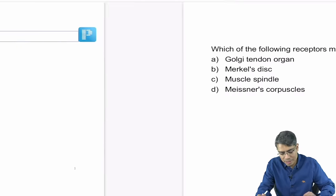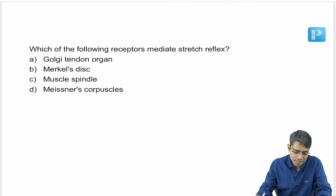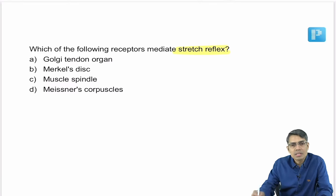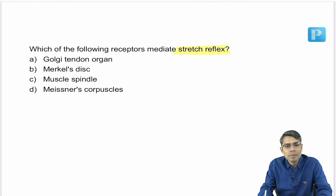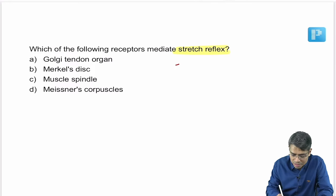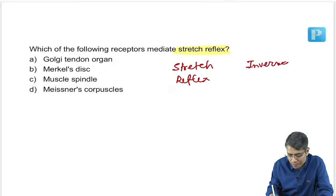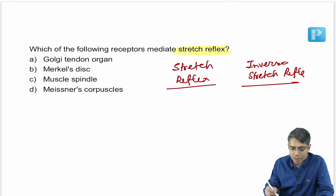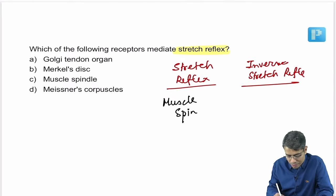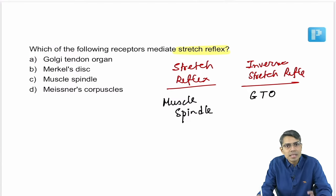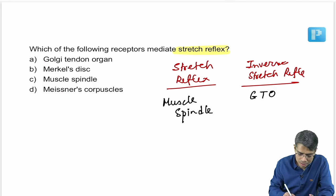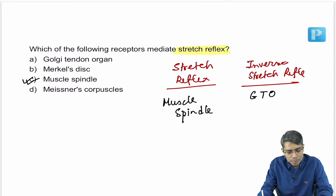Next question: which of the following receptors mediates the stretch reflex? Two important reflexes to remember for the FMG examination: stretch reflex and inverse stretch reflex. For the stretch reflex, the receptor is the muscle spindle. For the inverse stretch reflex, the receptor is the Golgi tendon organ. The answer here is muscle spindle.